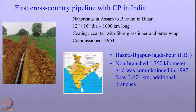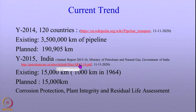Subsequently, additional branches were added to that and now it is close to 3500 kilometers of pipeline. What is shown here is the route of the pipeline starting from Azira to Jagdishpur. If you look at the current trend, the pipeline is growing across the globe. Looking at 2004 data across 120 countries, we have about 3.5 million kilometers of pipelines. In 2014, there was a plan for another 190,000 kilometers of new pipelines.